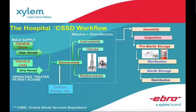We start from the very left side of the slide — from the bulk supplies of the hospital, which is a general store. Then the wards and units: the operating theaters, the patient rooms. What we collect here from the general store is the clean receipt, and from the wards or operations, the dirty receipt. We collect them and disassemble them.